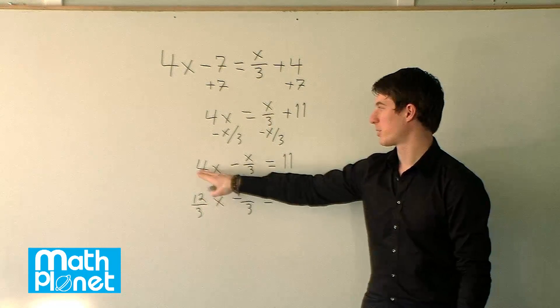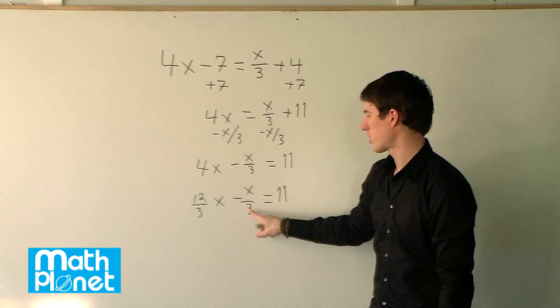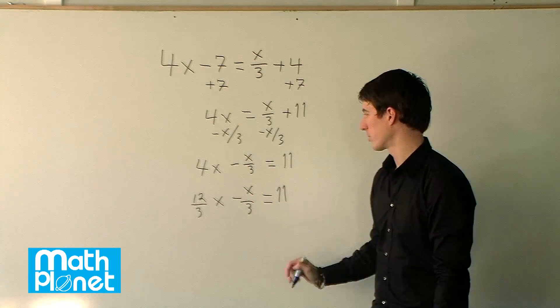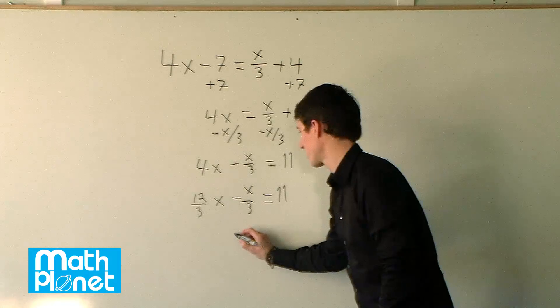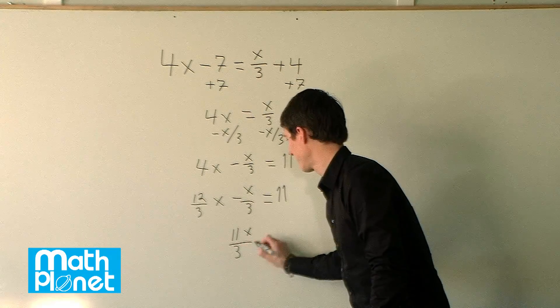In other words, we've multiplied the numerator and the denominator here by 3. So now we have the same common denominator, and we can subtract these to get a single x term. So 12 thirds x minus 1 third x gives us 11 thirds x.